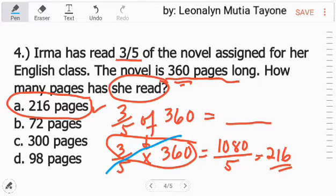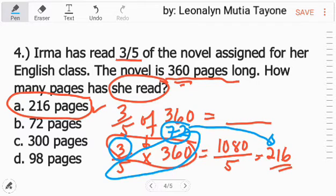Another way is doing this one. I-divide mo siya 360 divided by 5. And that is 72. Mag-list ka lang para hindi na tayo gagamit ng mga malalaking mga numbers. So, 360 divided by 5 equals 72. Ito na lang ang i-multiply mo. 3 times 72 is 216. So, the answer is letter A.